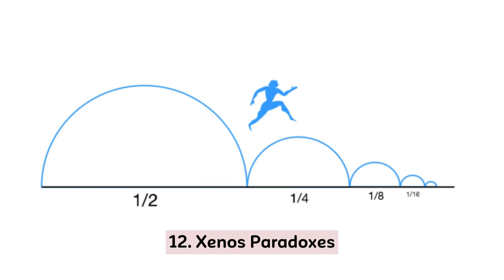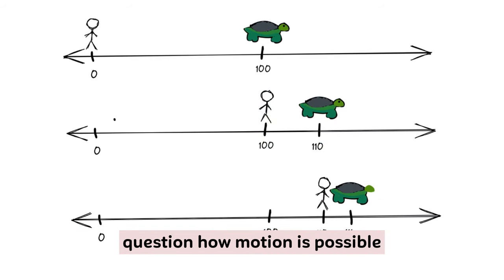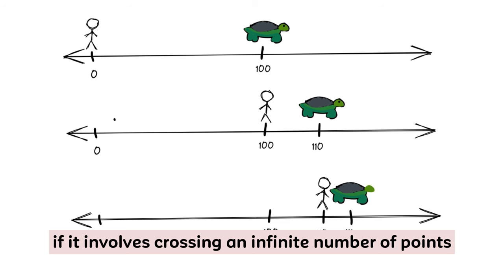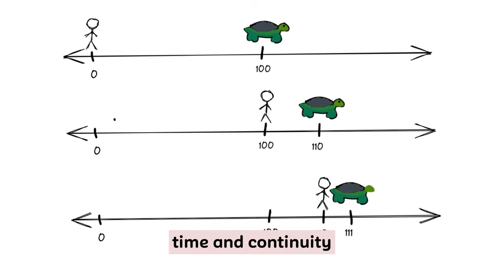12. Zeno's Paradoxes. Zeno's ancient puzzles, like the Dichotomy Paradox, question how motion is possible if it involves crossing an infinite number of points. They challenge our understanding of space, time, and continuity.